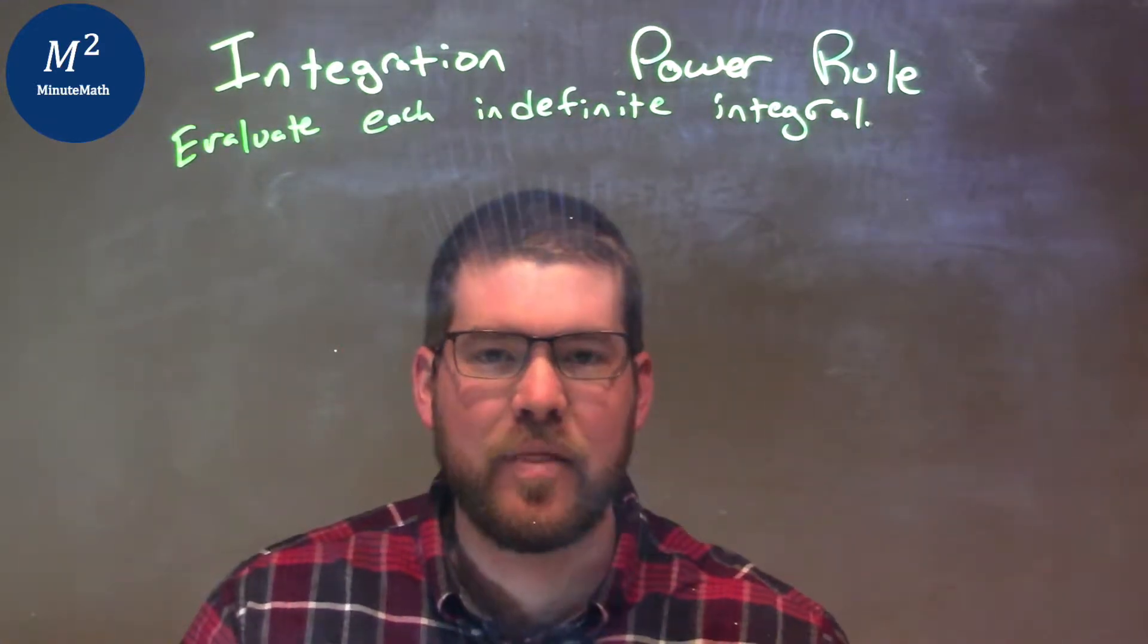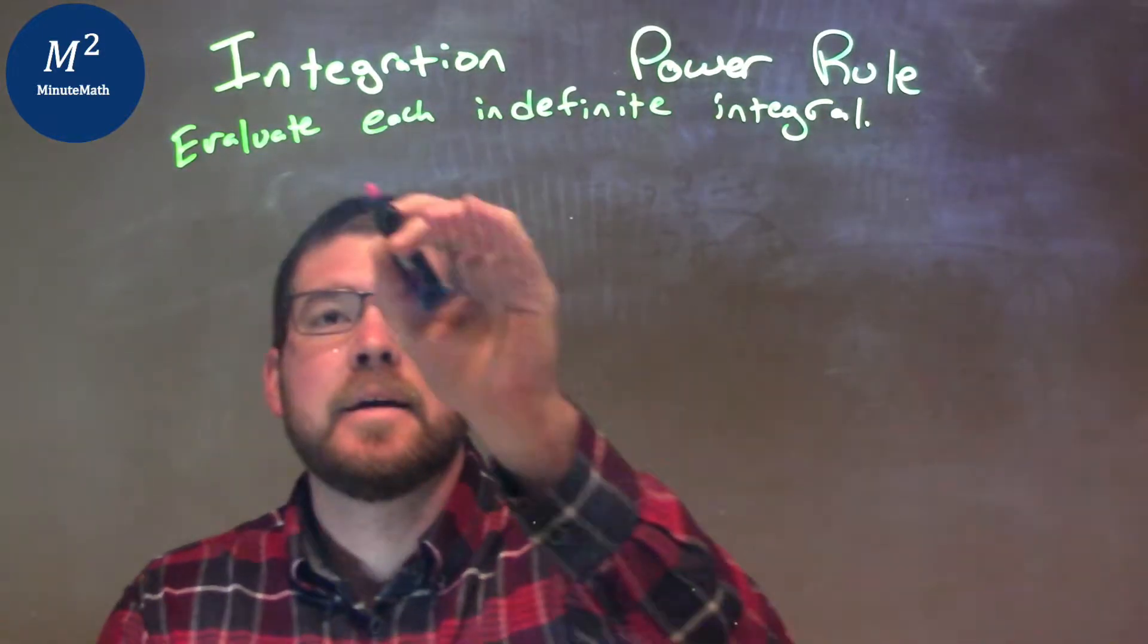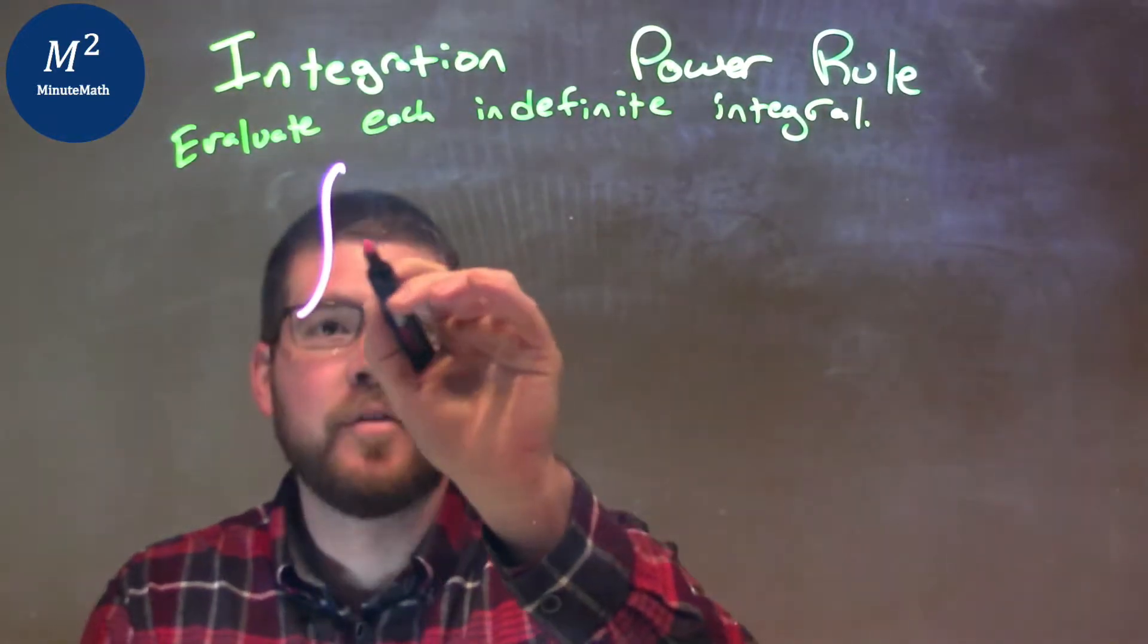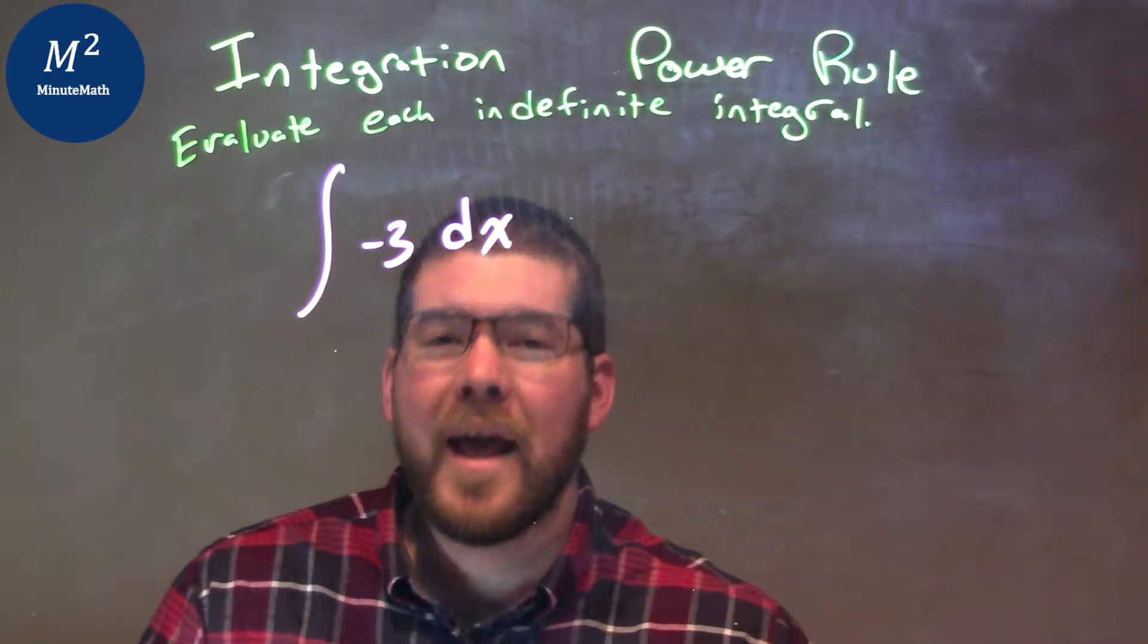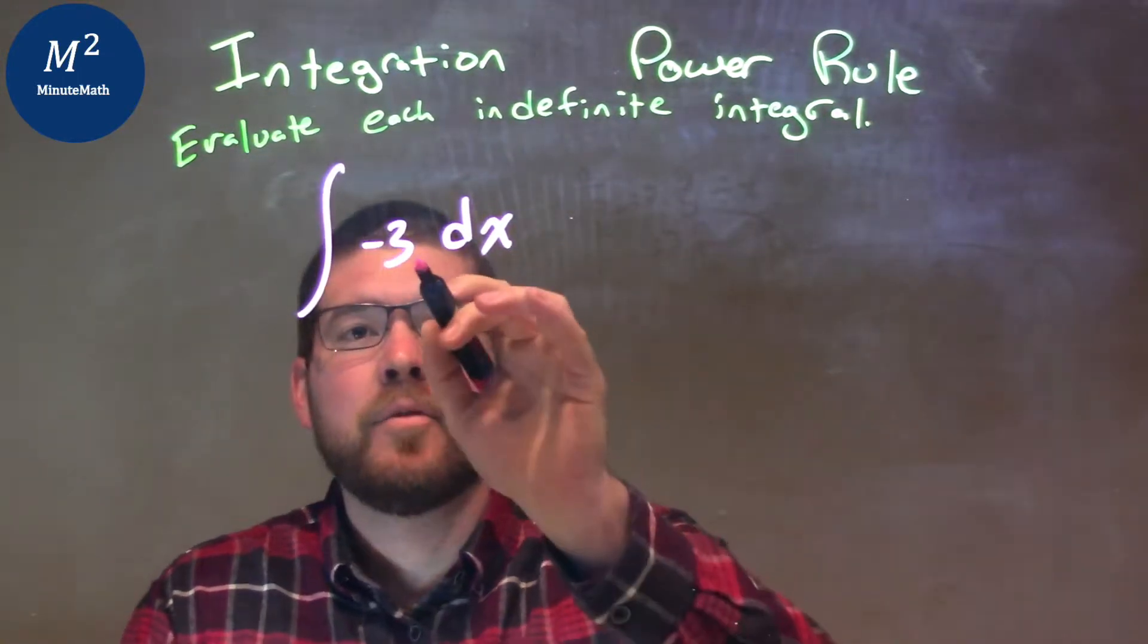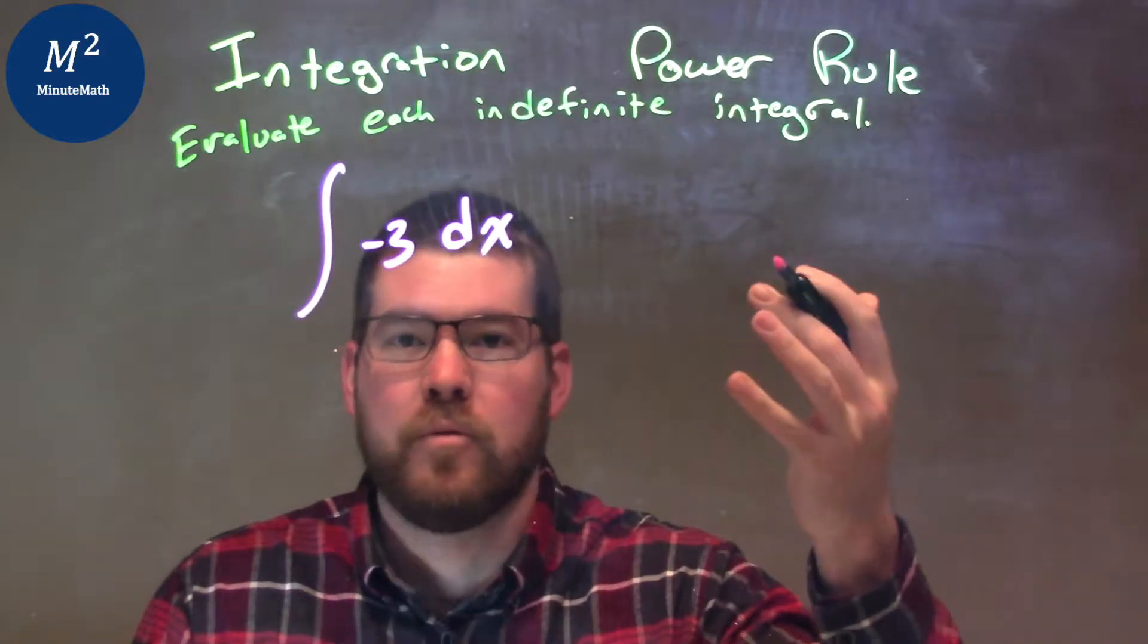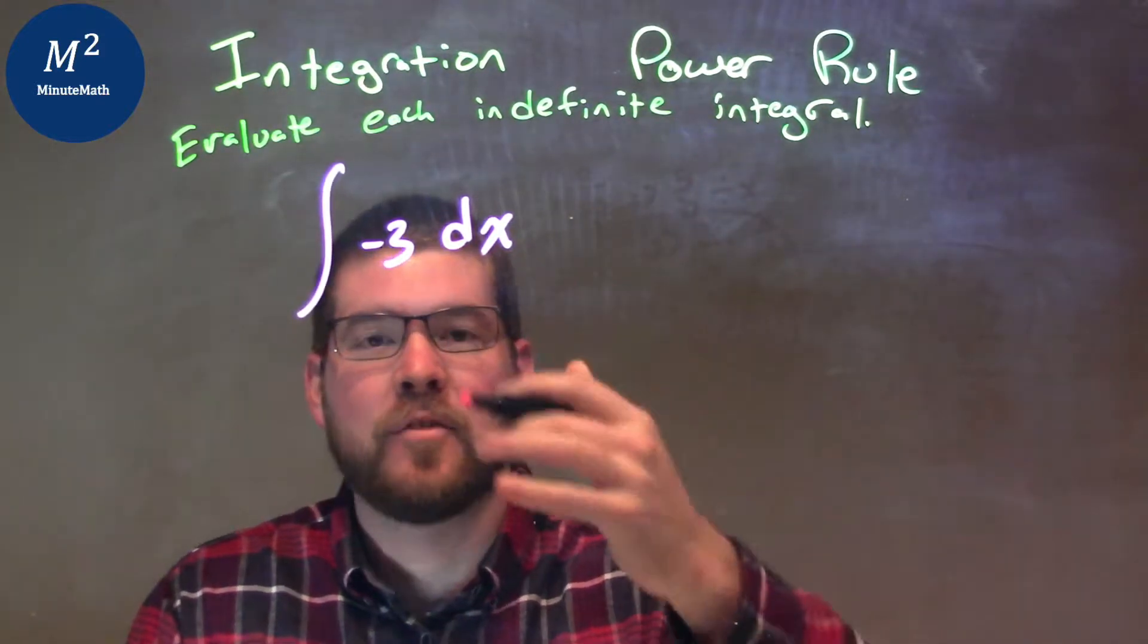I was given this integral of negative 3 dx. What I like to imagine is that the negative 3 has x to the 0 power right next to it. So if we add that exponent by 1...